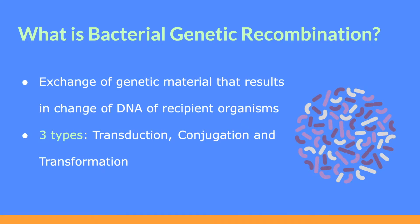It's important to understand what bacterial genetic recombination is. A basic definition is that it's the exchange of genetic material that results in a change of DNA of recipient organisms. This occurs by three main mechanisms: transduction, conjugation, and transformation.